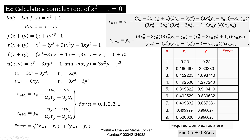The roots are −1, −ω, and −ω². The real root −1 can be calculated using the Newton-Raphson formula for real roots. Here we calculate −ω and −ω² as complex roots. Calculate one complex root and its conjugate gives the second root. The values of −ω and −ω² are the two complex roots obtained.